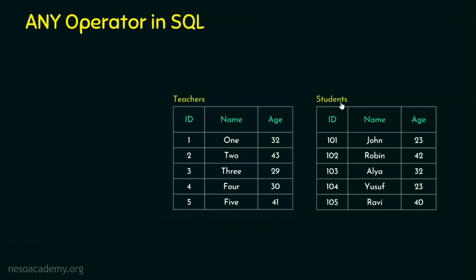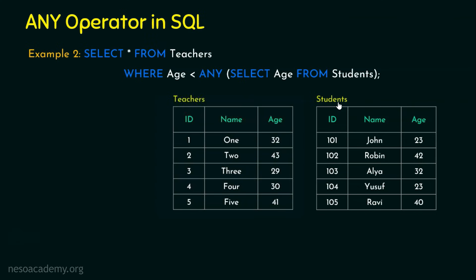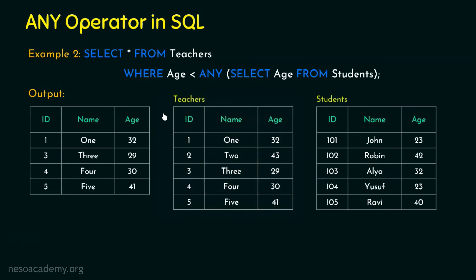Let's move to Example 2, using the same teachers and students tables but with a different operator. The query is: SELECT * FROM teachers WHERE age < ANY (SELECT age FROM students). All five ages are listed from the subquery. Any teacher whose age is less than at least one of those values will be returned.